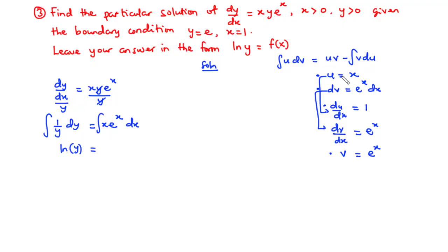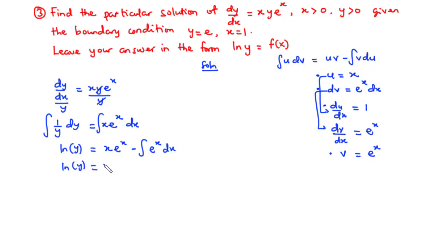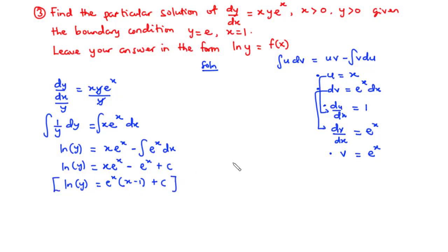Since we still have the integral sign, we integrate further. So ln(y) equals x times e to the power x minus e to the power x plus c. Factoring out e to the power x, this becomes ln(y) equals e to the power x times (x minus 1) plus c. This is the general solution of this differential equation.